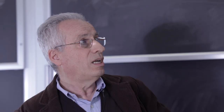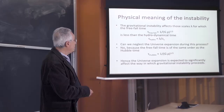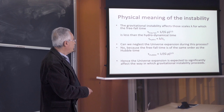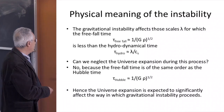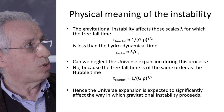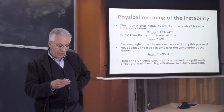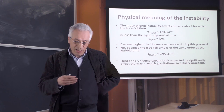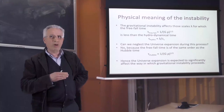The physical understanding is simple: gravitational instability occurs any time the free-fall time, proportional to one over the square root of rho_0, is less than the hydrodynamical time, which is the scale of the perturbation divided by the speed of sound. Unfortunately, the free-fall time is the same order of magnitude as the Hubble time. So the expansion of the universe is going to strongly affect the way in which gravitational instability occurs.